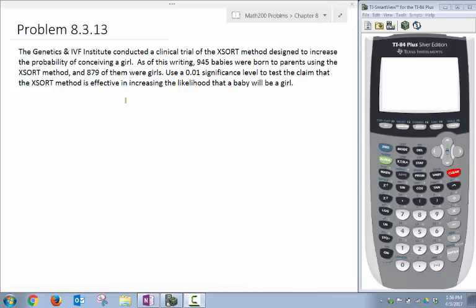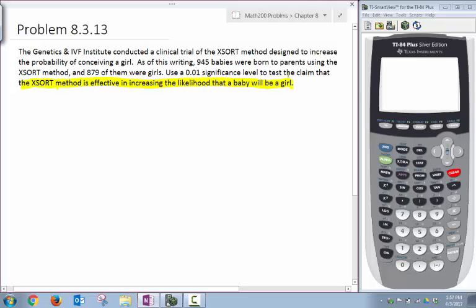Here's a problem similar to one of our homework problems. It says that a genetics institute conducted a trial for the X-sort method designed to increase the probability of conceiving a girl. In the particular trial there were 945 babies born to parents and 879 of them were girls. They want us to use a 0.01 significance level to test the claim that the X-sort method is effective in increasing the likelihood that you will get a baby girl. So the claim seems to be this statement: The X-sort method is effective in increasing the likelihood that a baby will be a girl.